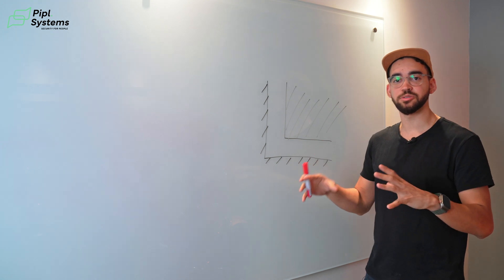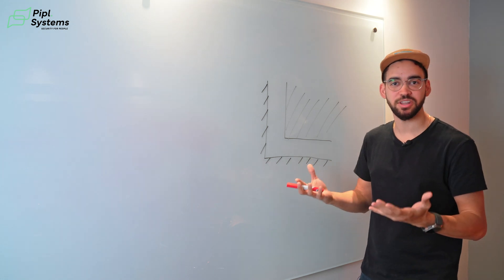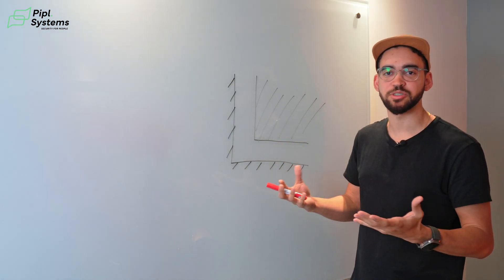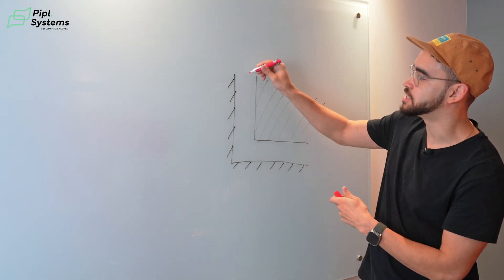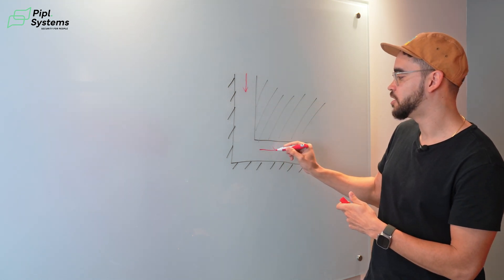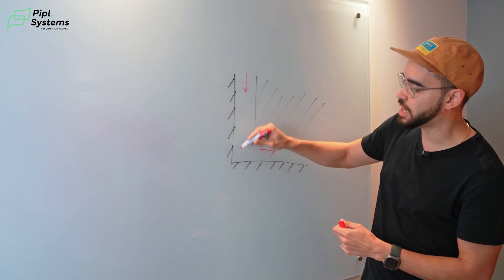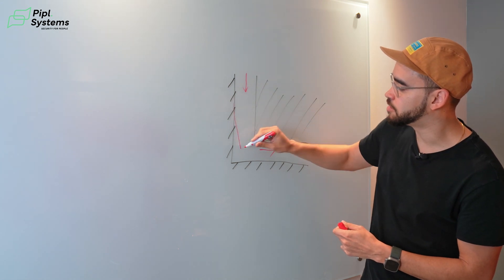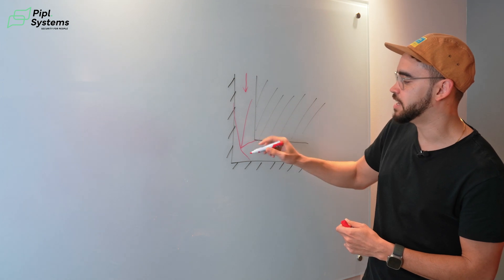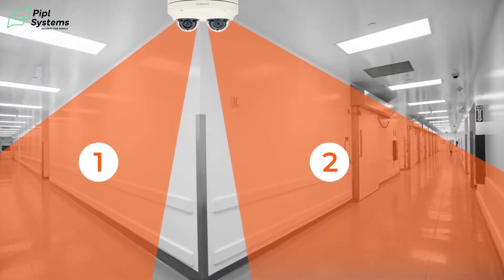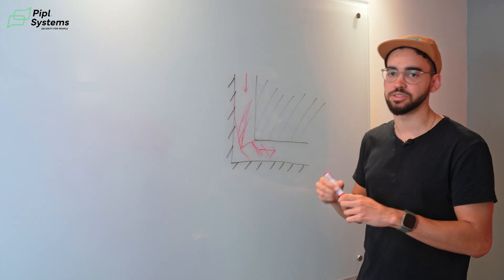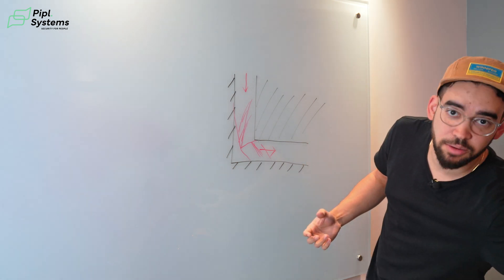Now let's talk about multi-sensor cameras with two, three, or four cameras inside the housing. Starting with the two-channel multi-sensor — multi-sensor and multi-directional are the same type of camera, just different names. A great use case is the L-shaped corridor: people can come from one direction or the other. You install the camera in the corner, and you cover both sides with no blind spot, saving time on installation while covering all corridors.